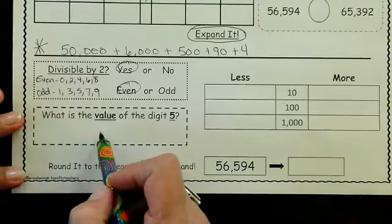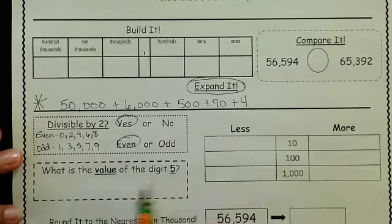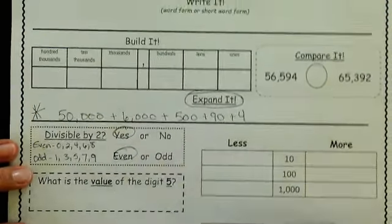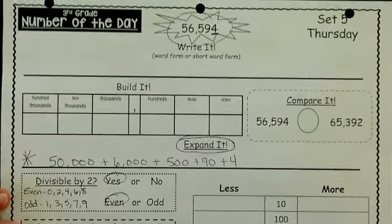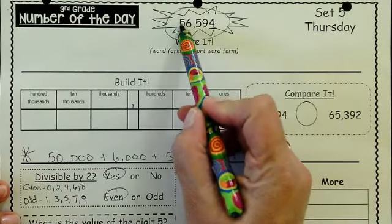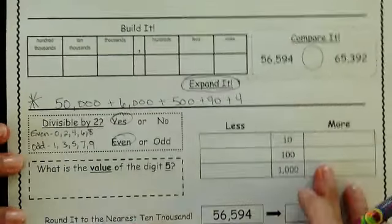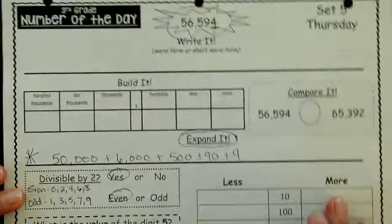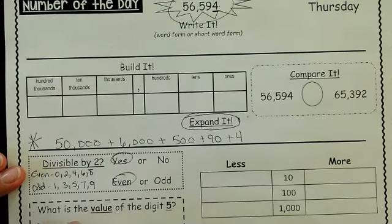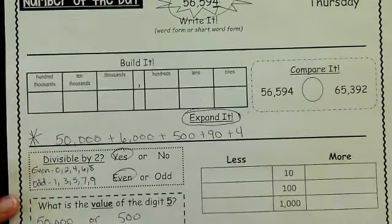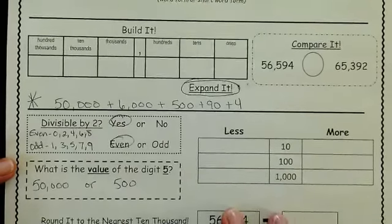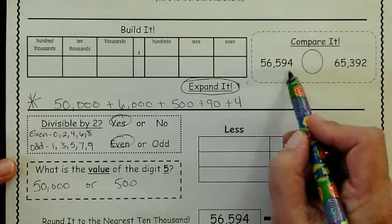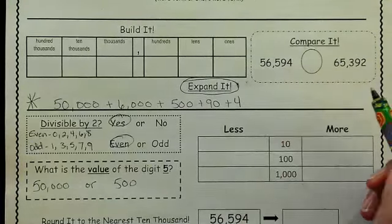Place value. What is the value of the digit? Well, I have two 5s in this number. I have a 5 here and I have a 5 here. So what is the value of the digit 5? Well, the value is either 50,000 or 500, depending on which number I am looking at. Because this is my number, 56,594.